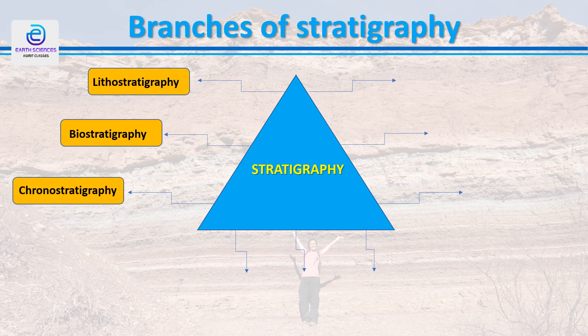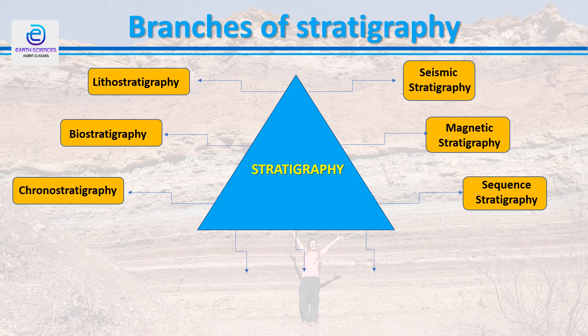Traditionally, up to 1960, there were three most popular branches: lithostratigraphy, biostratigraphy, and chronostratigraphy. Lithostratigraphy involves the subdivision, correlation, and interpretation of sediments and rocks on the basis of their lithological characters. Biostratigraphy deals with the recognition, subdivision, correlation, and interpretation of sediments and sedimentary rocks on the basis of their fossil content. Chronostratigraphy involves the recognition, subdivision, correlation, and interpretation of sediments and sedimentary rocks on the basis of their time of formation.